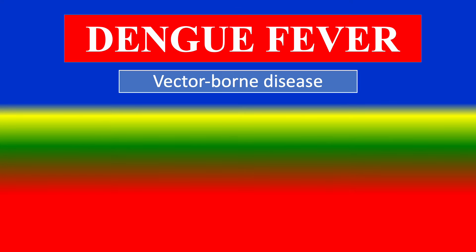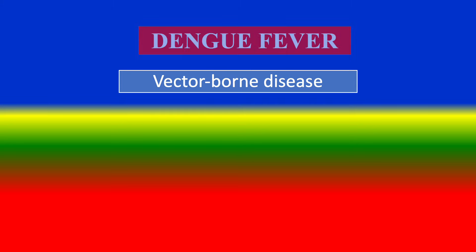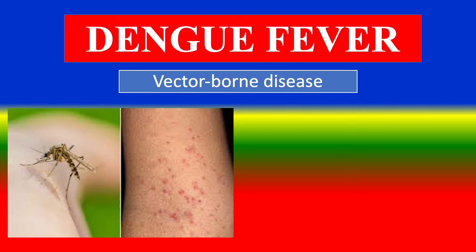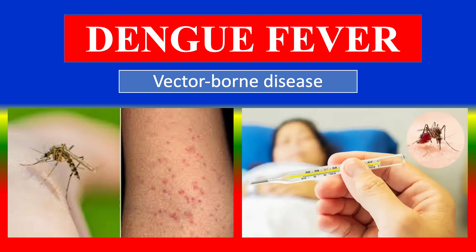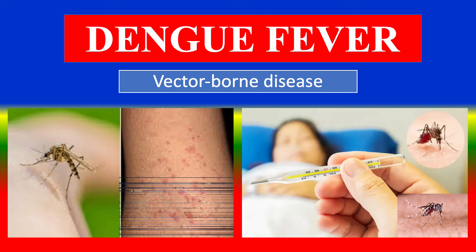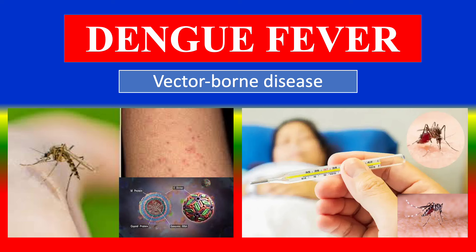Dengue fever is a vector-borne, communicable disease. Key features include mosquitoes, skin rash, fever, and the dengue virus.